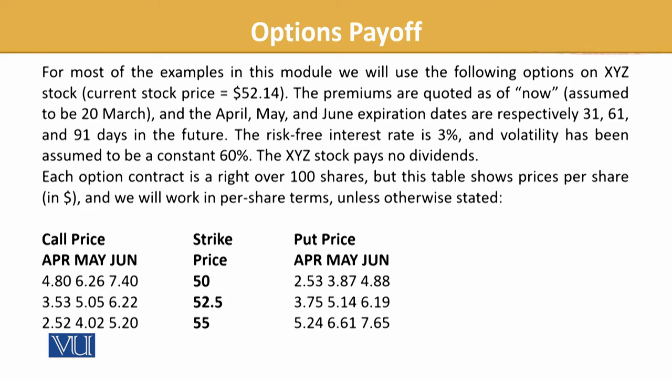We can even name it. Currently its price is $52.14. The premium is now quoted — today is assumed to be March 20, and the products available are for this month, such as April, May, and June expiration dates: 31, 61, and 91 days in the future. The risk-free rate is currently 3%. I recommend you draw the data on a piece of paper so that you can reflect and relate. Volatility is assumed to be constant at 60%.